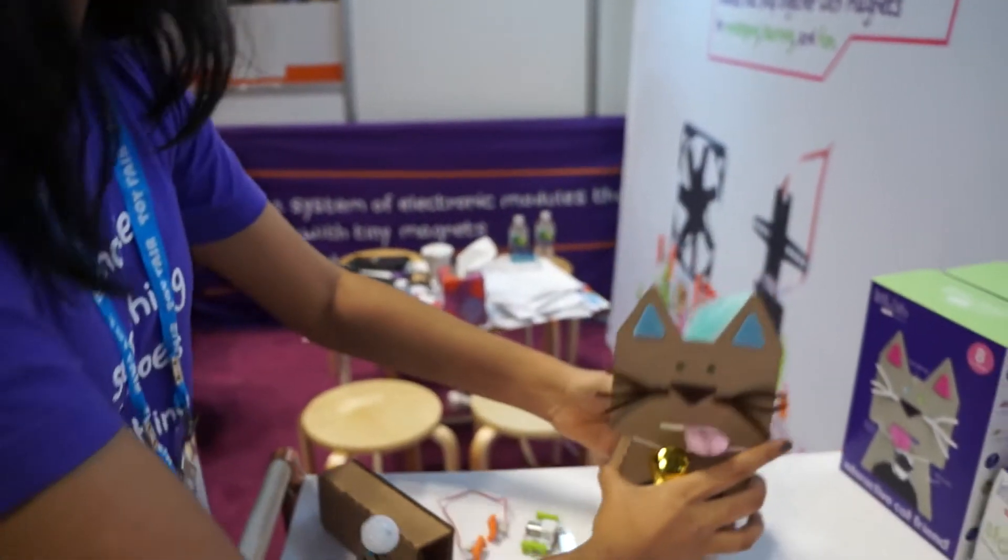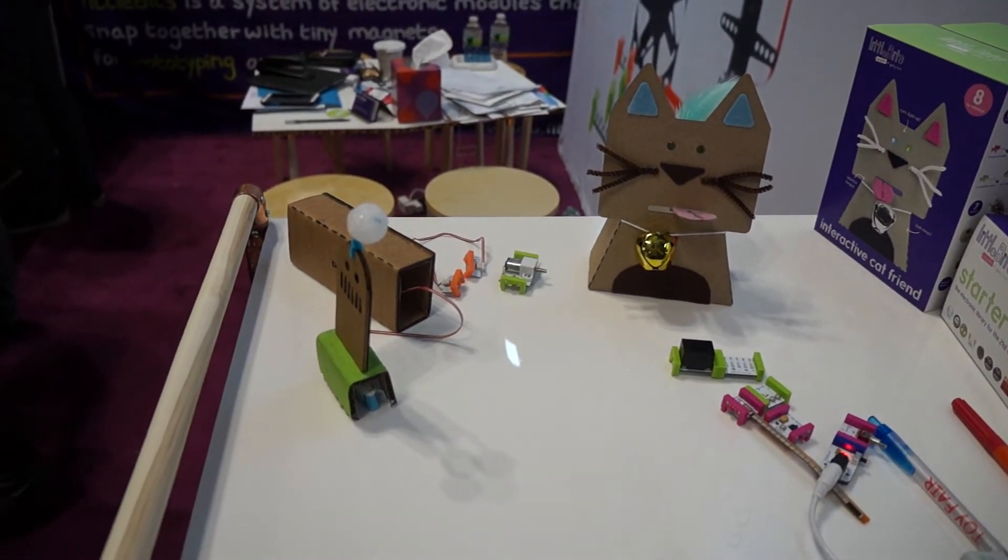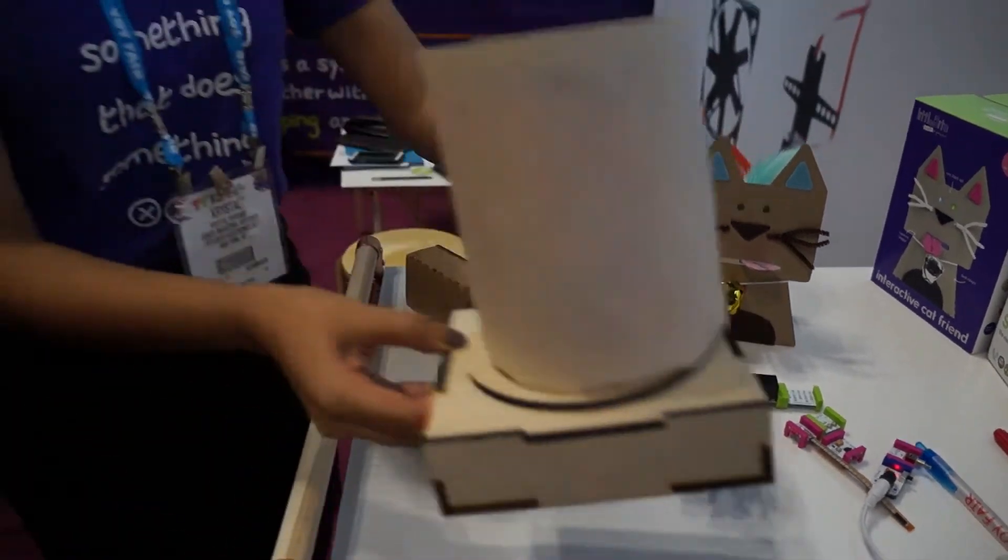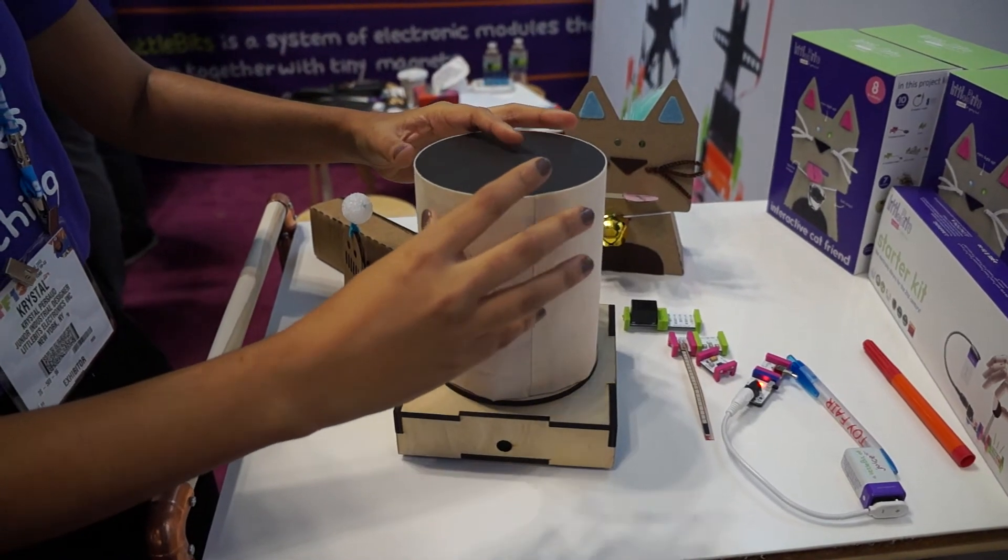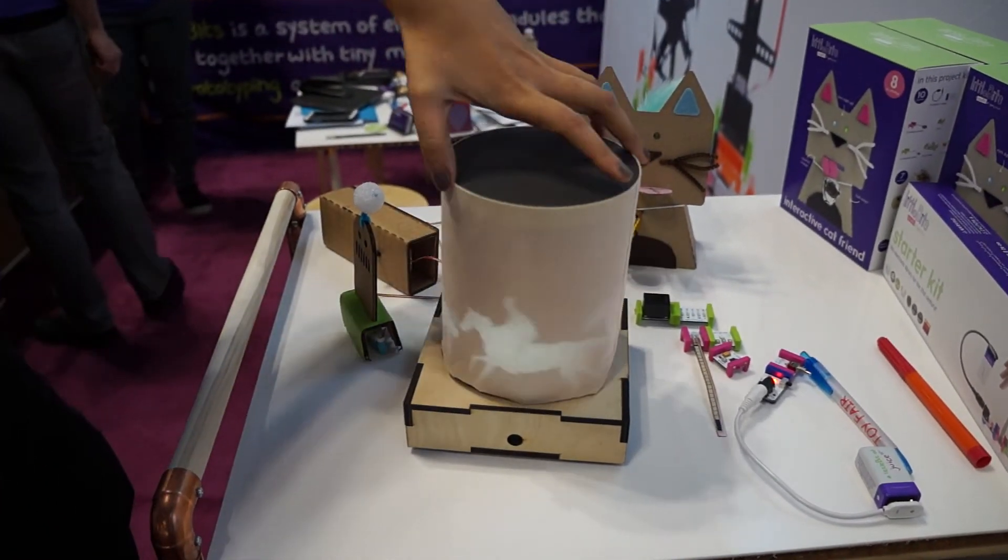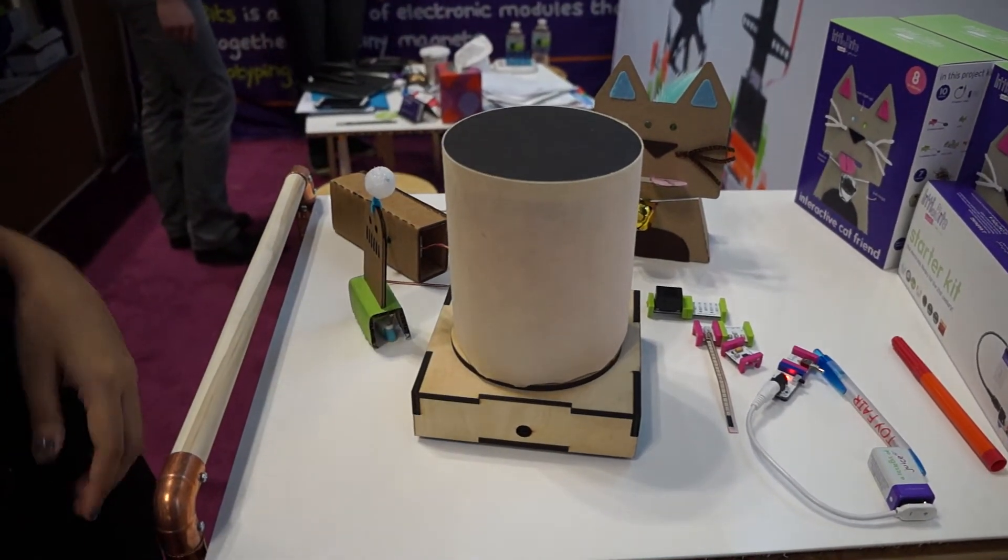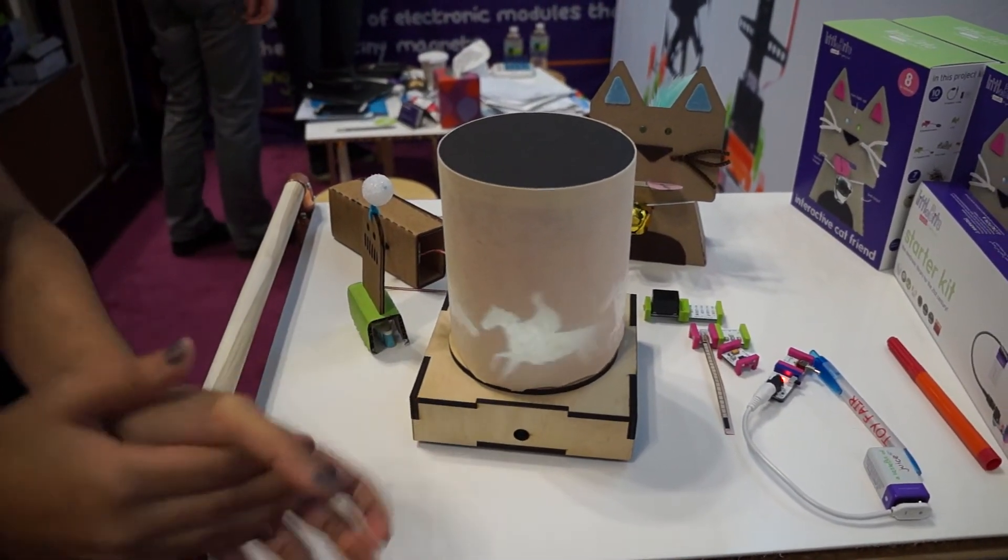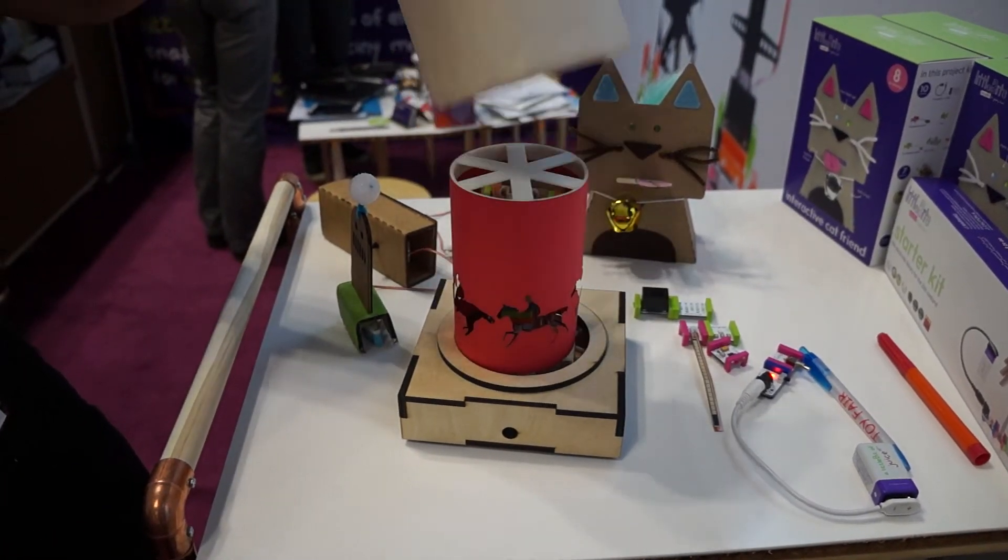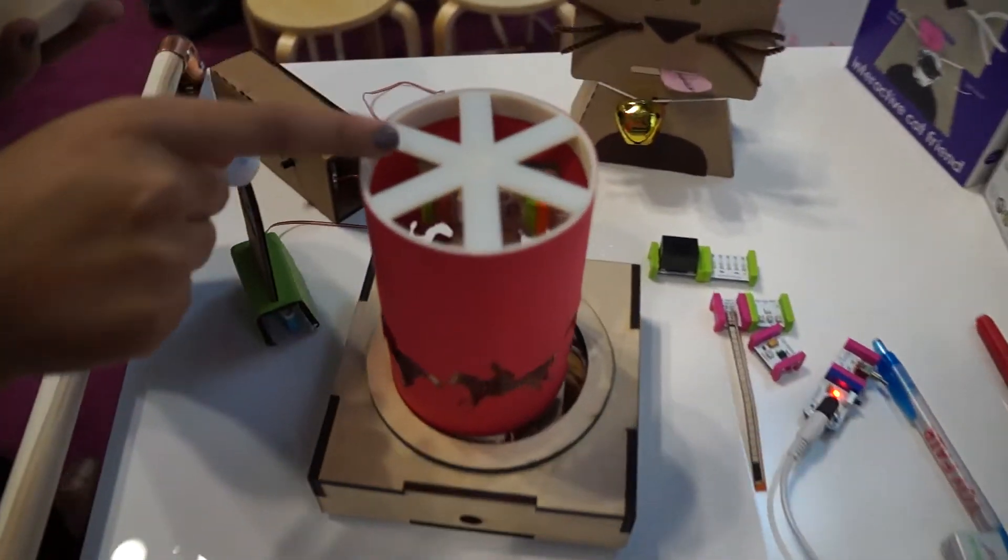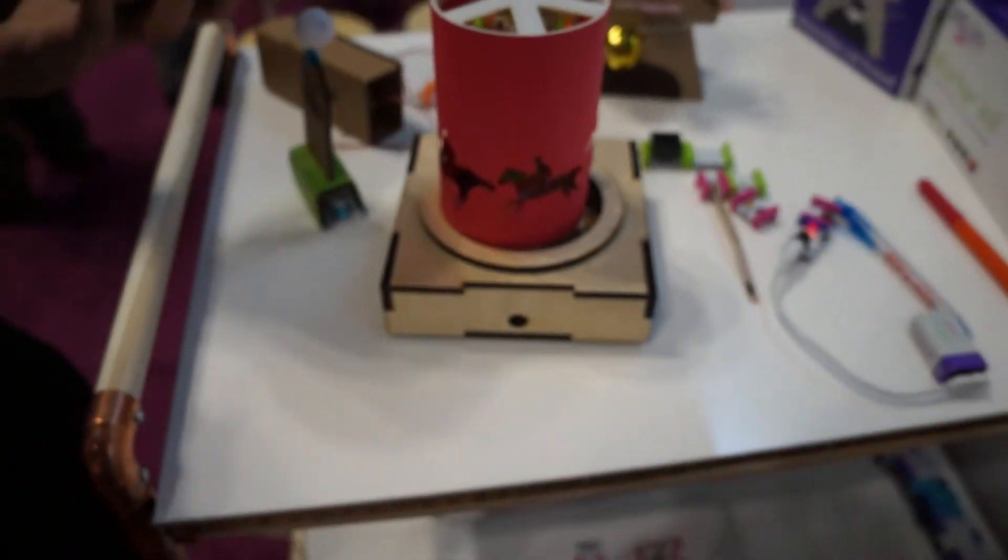And we have one more. It's one of our favorites. This is an example of a high end project you can make. So it's a sound triggered animated lamp. Let me just turn it around. So if you clap, you see horses running. And it's all made with little bits. So inside, you can see that there's a DC motor that's spinning this. And we just made a stencil cutout to make the horses.